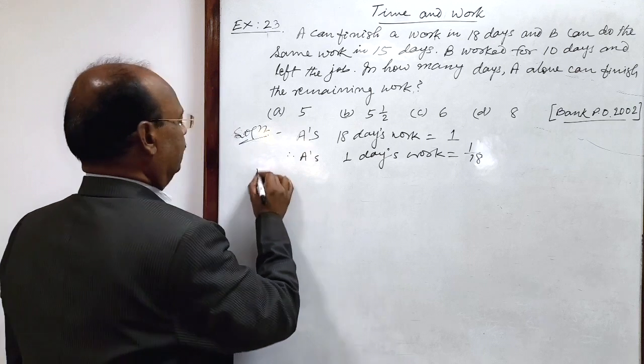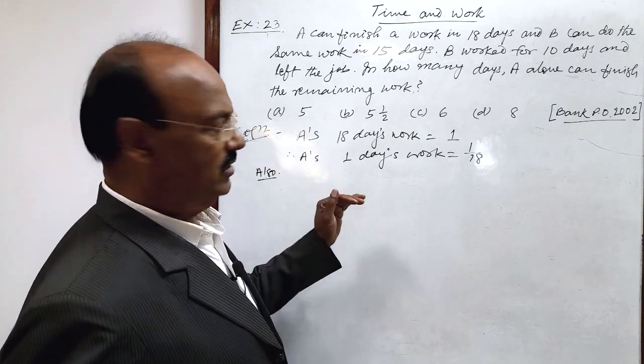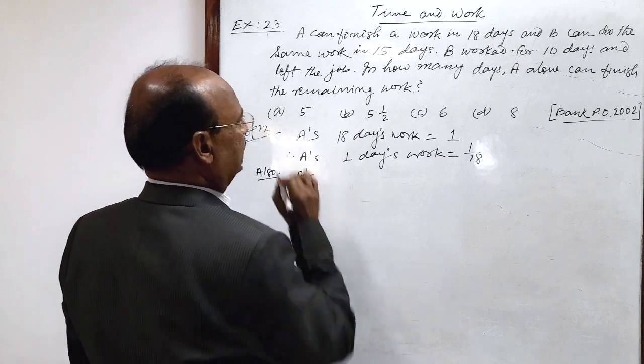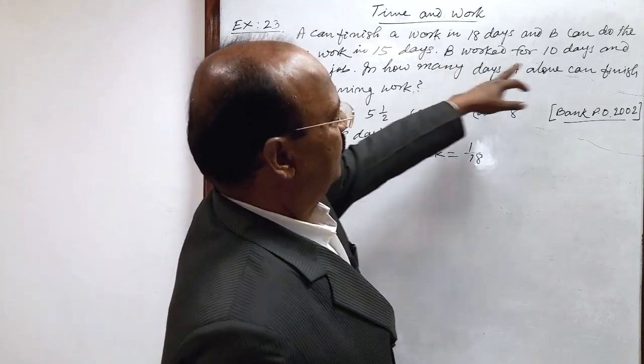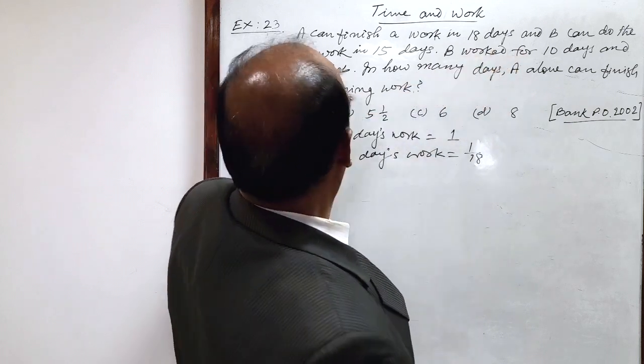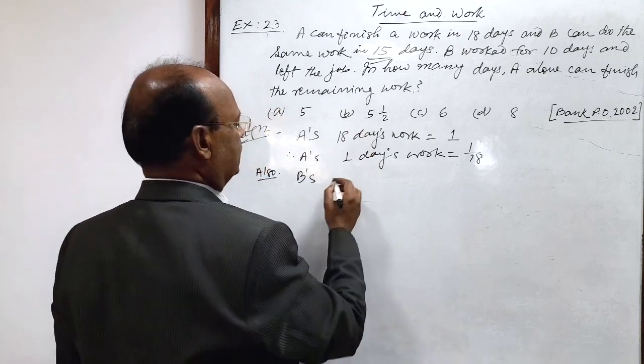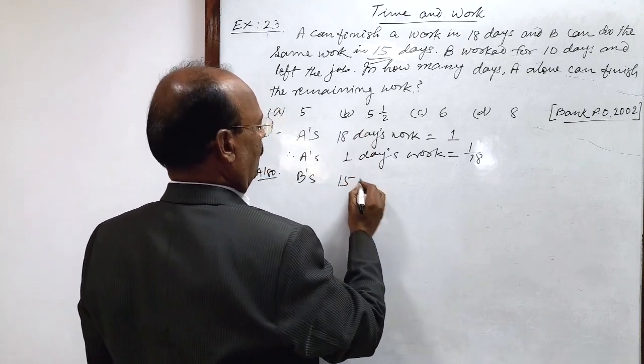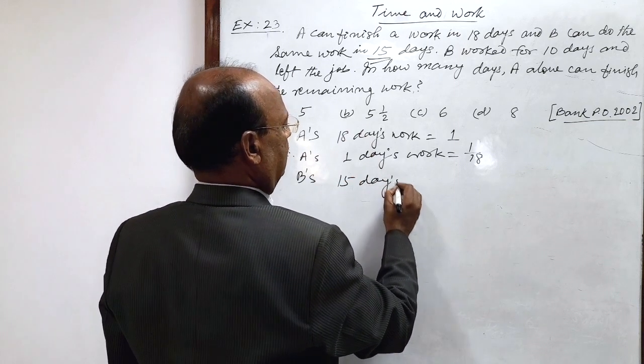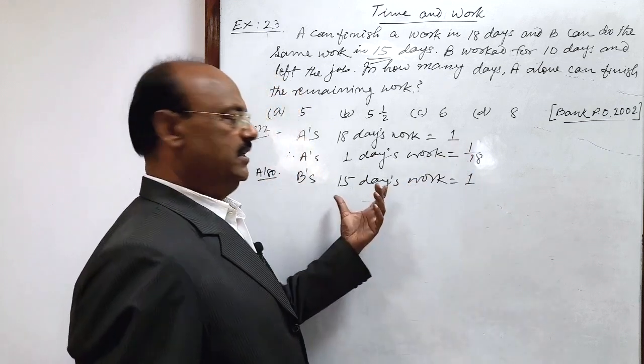Similarly, we can find B's 1 day work. B worked for 10 days and B can do the same work in 15 days. So B's 15 days work is 1. One complete job he is doing in 15 days.